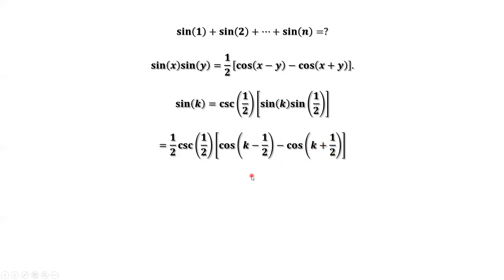We can continue to simplify this part. It is cosine of two k minus one divided by two minus cosine of two k plus one over two.